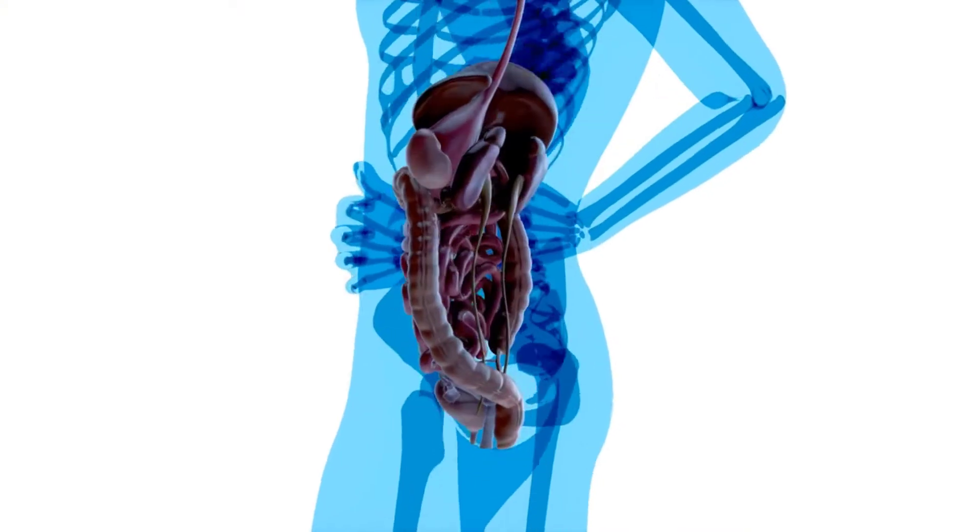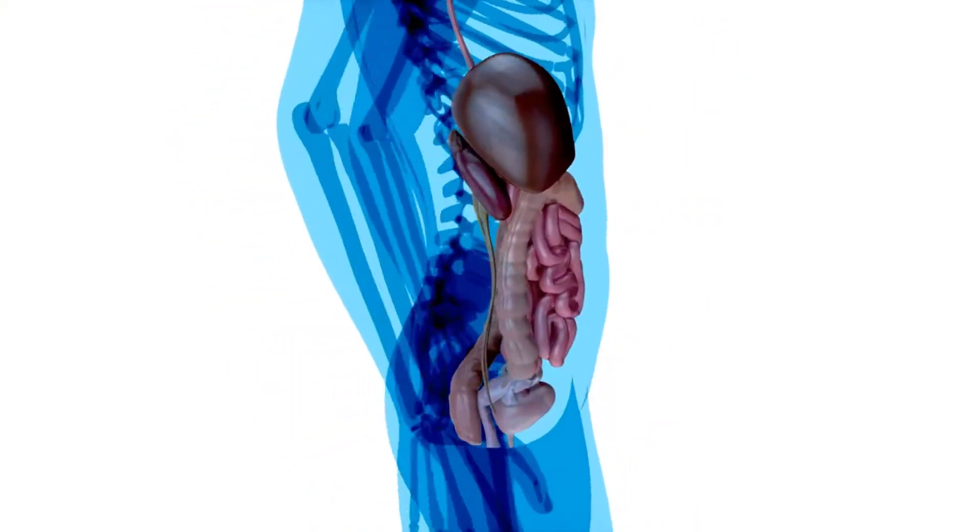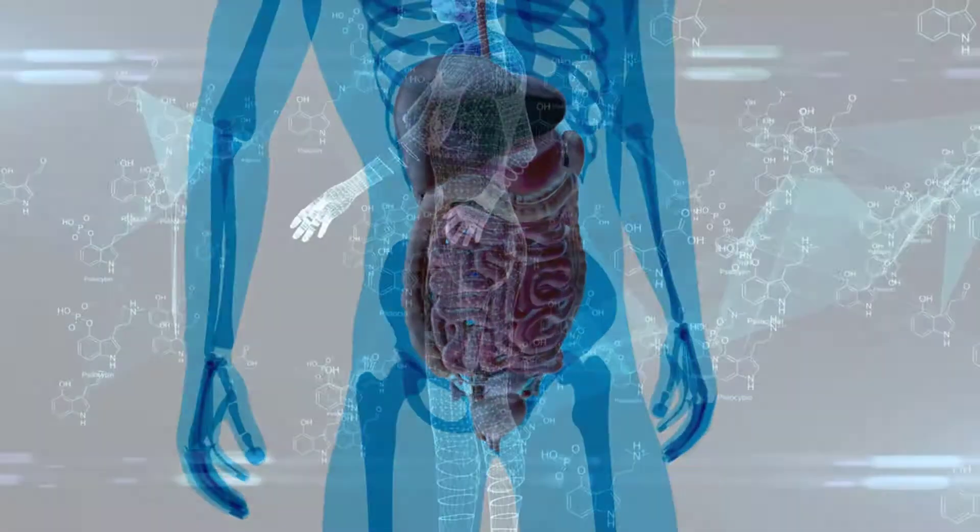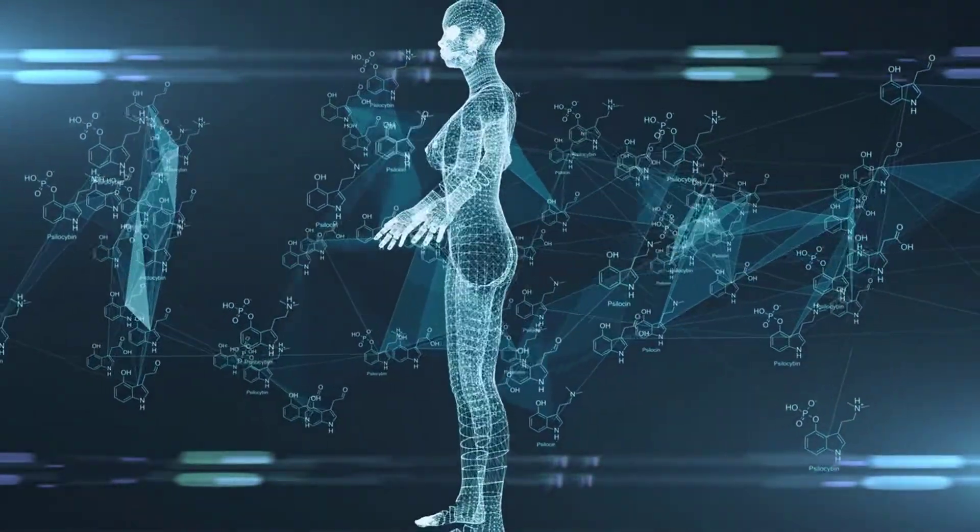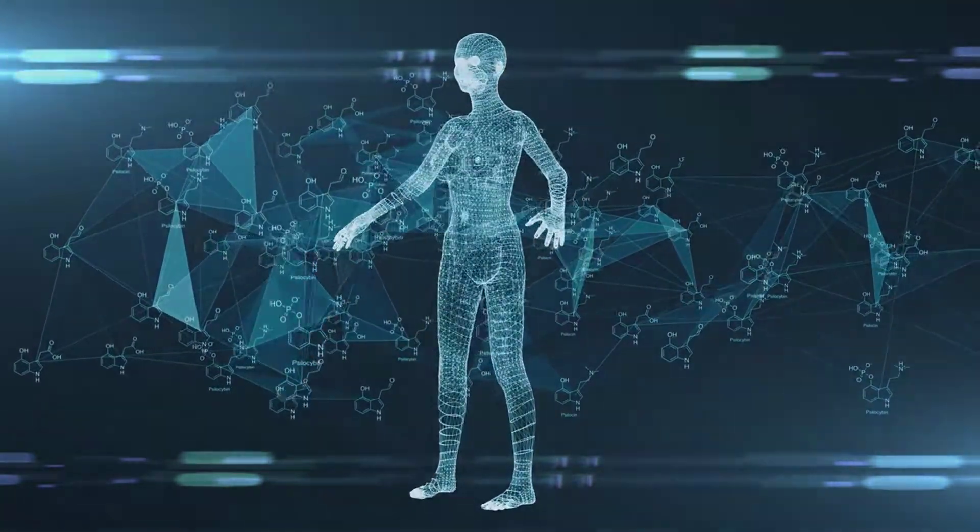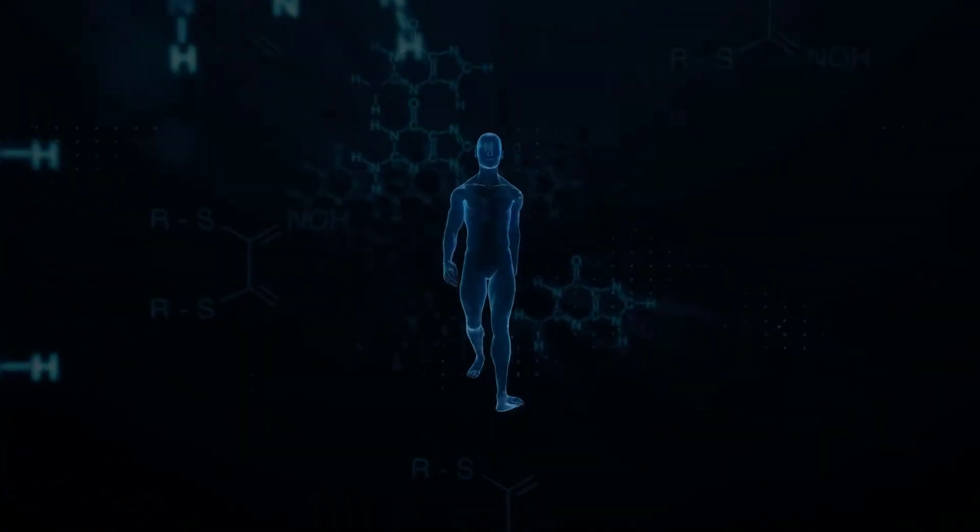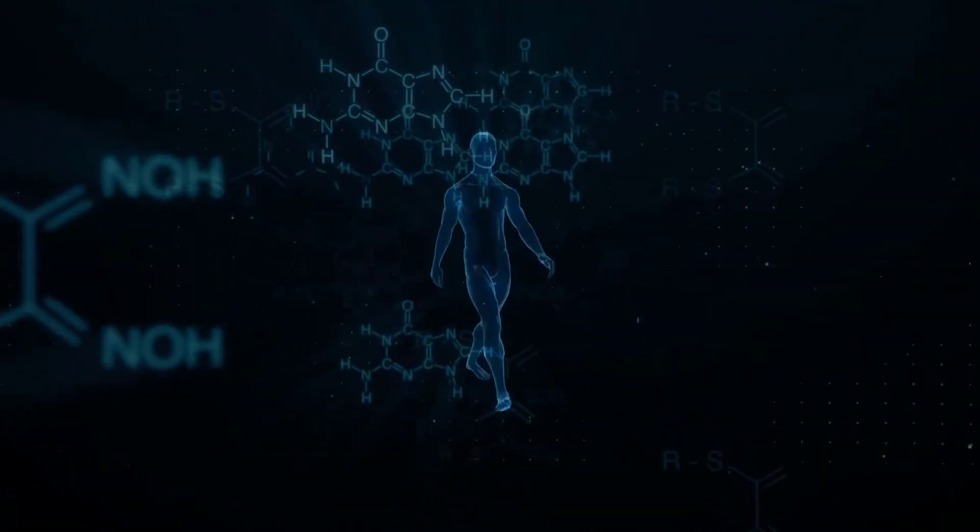Taken together, these two processes, anabolism and catabolism, are called metabolism. Metabolism is the sum of all anabolic and catabolic reactions that take place in the human body. Both anabolism and catabolism occur simultaneously and continuously to keep you alive.